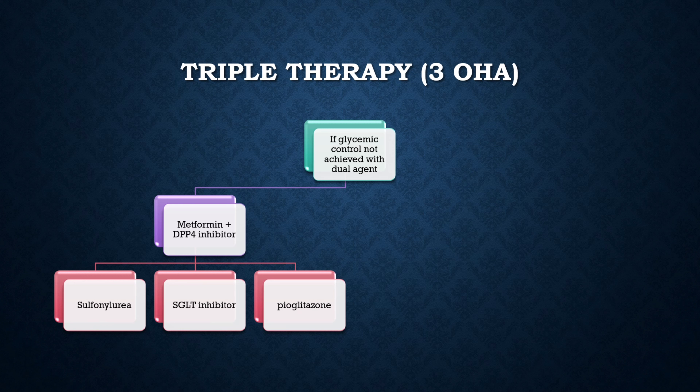You can also add pioglitazone at a dose of 15 mg once or twice a day. The side effect of pioglitazone is weight gain. Add pioglitazone only if your patient is lean and thin, or wants to gain weight. For obese patients, ideally avoid pioglitazone due to weight gain.